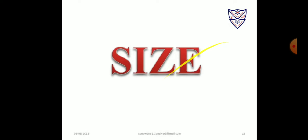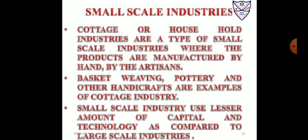The size of an industry is determined by production volume, number of people employed, and the capital amount invested. Industries are classified into small-scale and large-scale. Household or cottage industries are examples of small-scale industry. Artisans manufacture these products by hand. Examples of cottage industries include pottery and basket weaving. Lesser amounts of technology and capital are required. Industries that process food and silk weaving are also examples of small-scale industry.